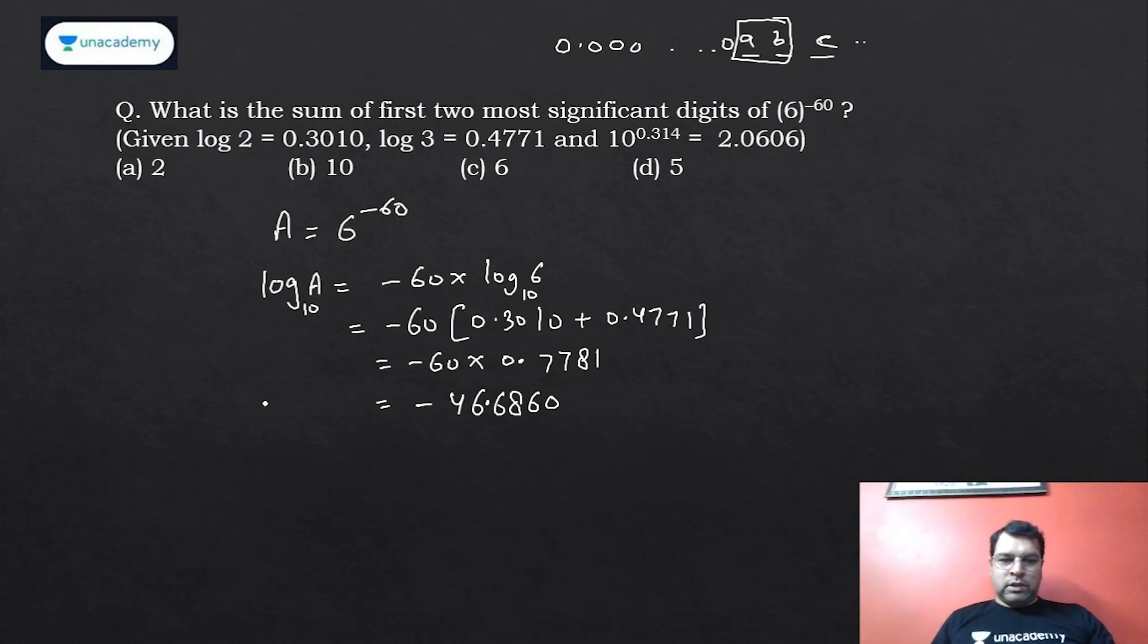So log A base 10 is coming as -46.6860. Now we need to understand this. When you say log 2 is 0.301, log 20 will be 1.301, log 200 is 2.301.